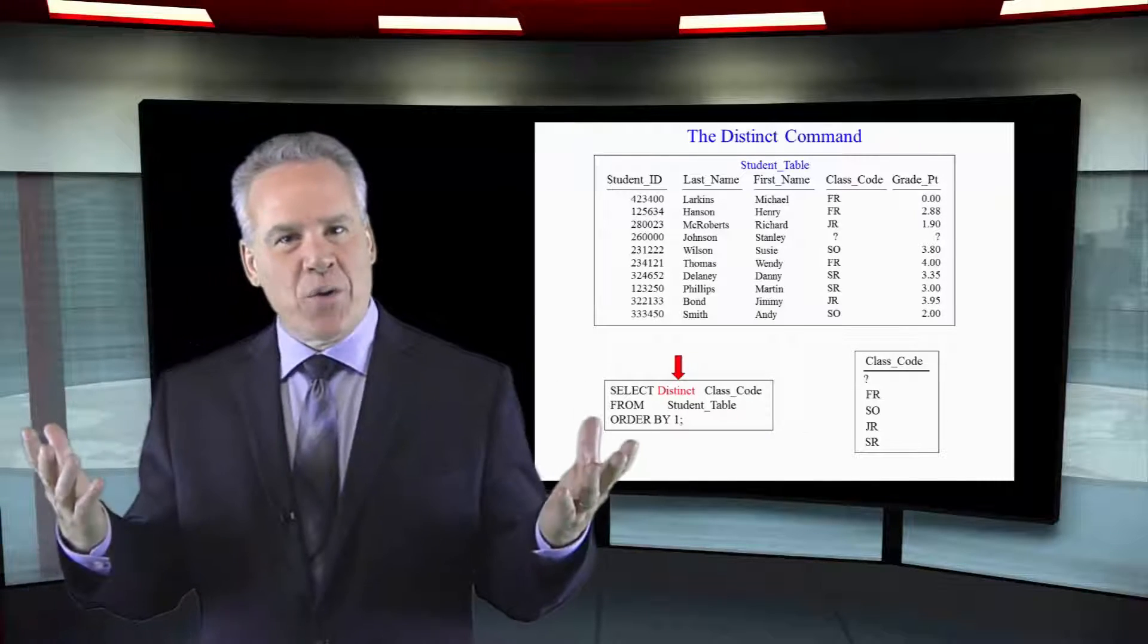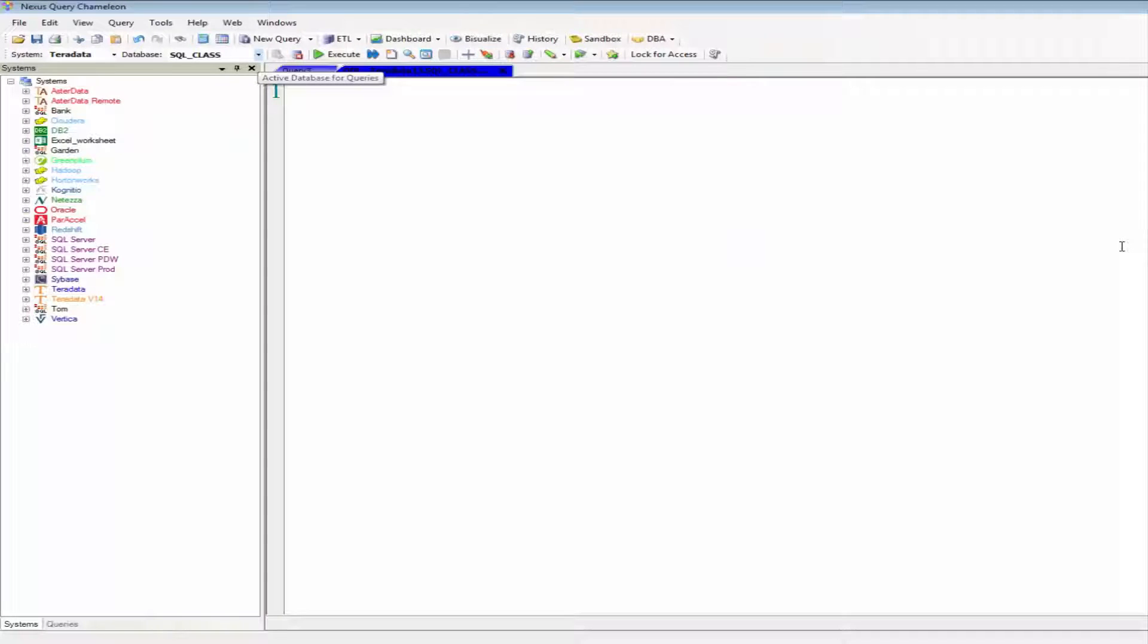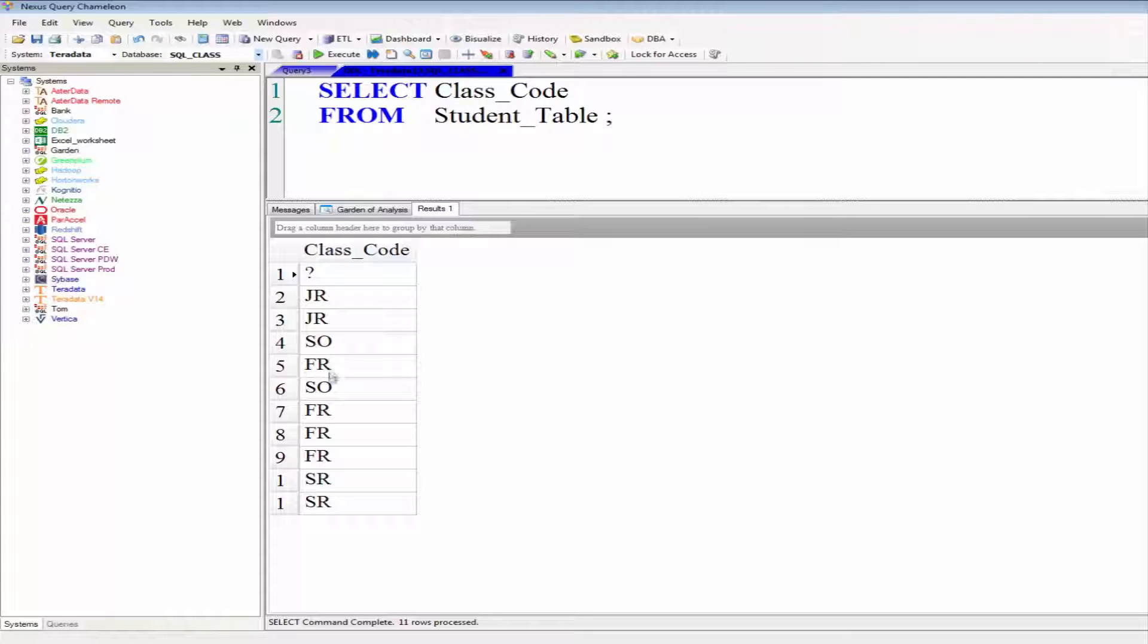Well if I just ran a query and said select class code from student table, I'd get many rows and many class codes and many duplicates. There's some freshmen, there's multiple sophomores, juniors, seniors.